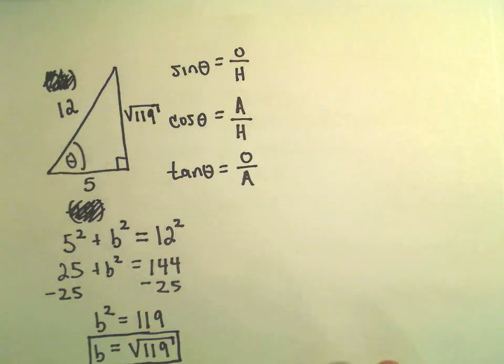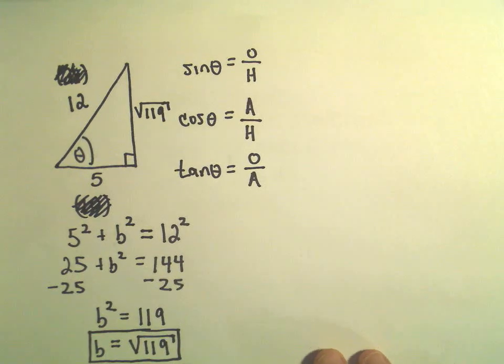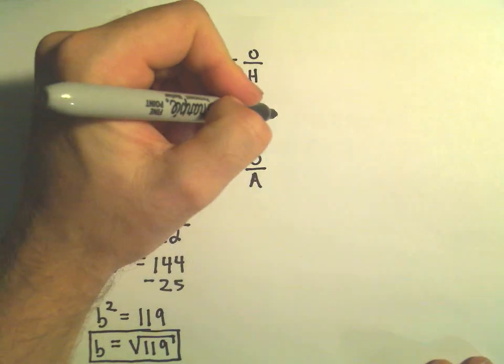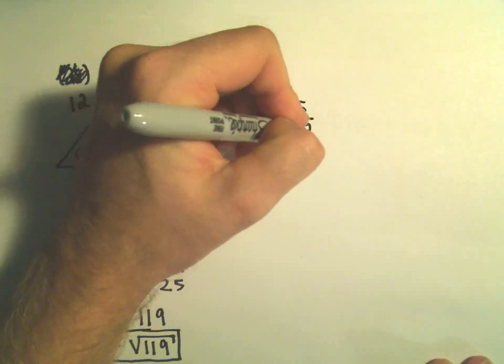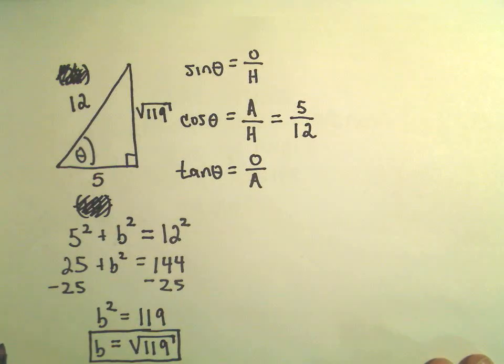Now we've pretty much got everything we need. We can start labeling everything. Again, we knew that cosine, that was given to us at the beginning. That was the adjacent length over the hypotenuse length, which would be 5 over 12.